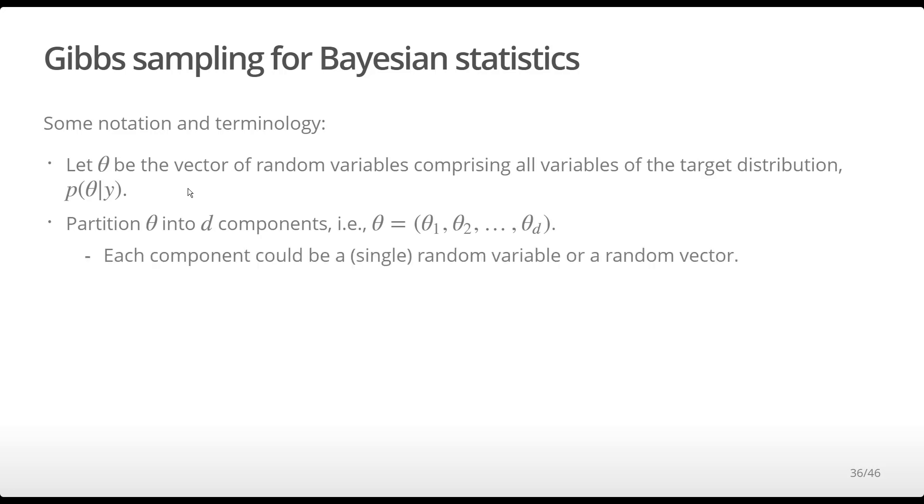Note that these components can be a single random variable, or a component might be a random vector containing several random variables. Theta minus j denotes the vector containing all components of theta except the j-th component. You can specifically see in this vector that we have all d components except the j-th one.